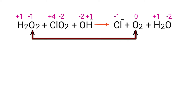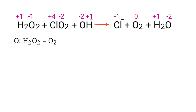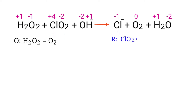In this equation, oxygen has a charge of minus one and is changing to zero, so oxygen is being oxidized. Chlorine has a charge of plus four and is changing to minus one, so chlorine is being reduced.